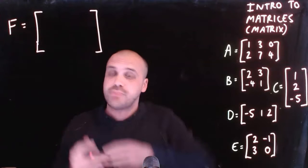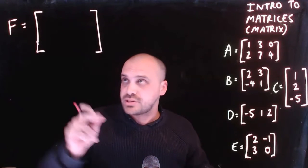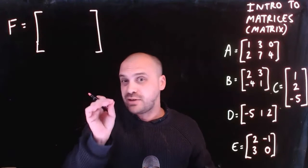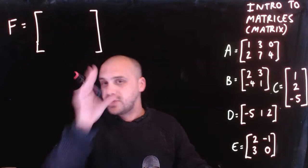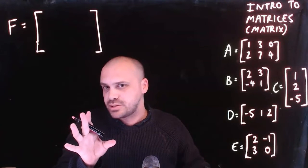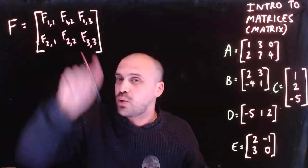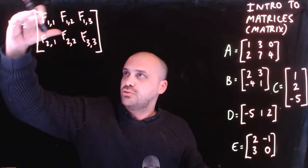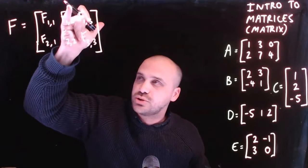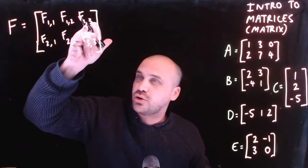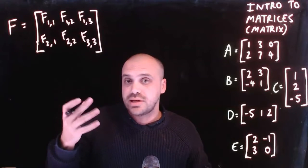New idea — I have a new matrix, matrix F. What we need to talk about are elements. Every single number in a matrix is called its element. We have a particular way of naming all of these elements. F subscript 1,1 is element row 1, column 1. This is element row 1, column 2. This is element row 1, column 3. In this way we can identify all of our elements easily.